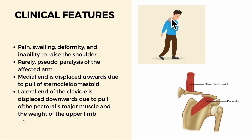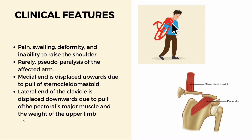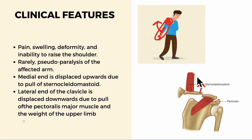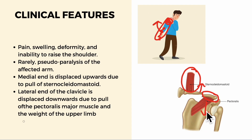Looking at the clinical features: there will be pain, swelling, and deformity, and also inability to raise the shoulder. Rarely there will be pseudo-paralysis of the affected arm. In this deformity the medial end near the sternum is displaced upwards due to the pull of the sternocleidomastoid muscle, while the lateral end of the clavicle is displaced downwards due to the pull of the pectoralis major and the weight of the upper limb.